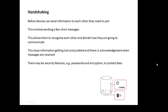When devices talk to each other, they have to do something called handshaking. If two devices want to connect — whether by Wi-Fi, Bluetooth, or whatever — they have to handshake, which involves exchanging a few short messages, saying hello to each other, and deciding how they're going to communicate. This happens to avoid information getting lost or jumbled up, and it's also nice to get acknowledgement that information has been received. There may also be security features involved, like passwords and encryption — a kind of code to protect the data so that only certain routers can understand it.